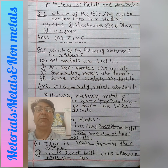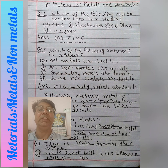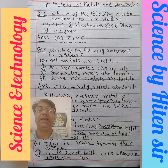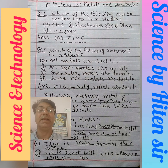Our question number one is: which of the following can be beaten into thin sheets? The four options are Zinc, Phosphorus, Sulphur, and Oxygen. The answer will be Zinc. Zinc is beaten into thin sheets.